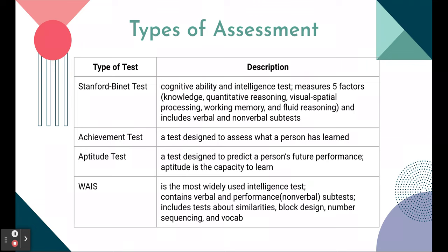An aptitude test predicts how you could do at something in the future — like those job tests that told you what careers you'd be good at based on your interests. The WAIS is the most widely used intelligence test. It contains verbal and performance or non-verbal subtests, including tests about similarities, block design, number sequencing, and vocabulary. You're going to get a look at some of these tests in a moment.